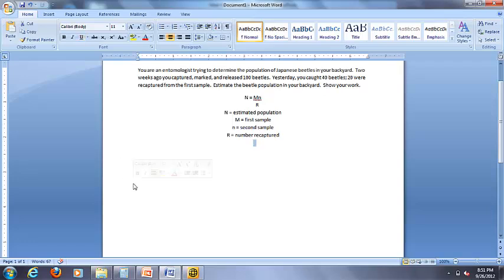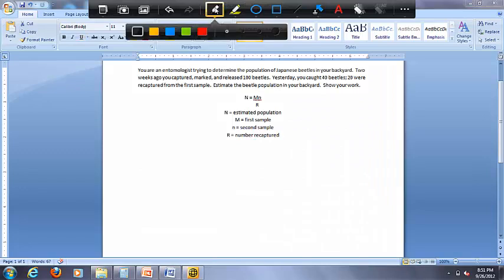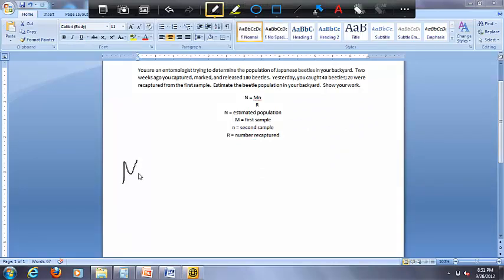So first of all, our big M is our sample that we collect first. So big M, in our example, if we look through the whole word problem, was 100 beetles. That's what we collected the first time two weeks ago. So big M equals 100.